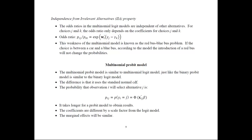We could also use the multinomial probit model, which is similar to the logit model just as the binary probit relates to the binary logit. The only difference is that we use the standard normal CDF: P(y_i = j) = Phi(x_ij * beta). The probit model takes a little longer to compute, and the coefficients differ by a scale factor, but the marginal effects are similar. Everything you know about how binary probit relates to binary logit applies here as well.